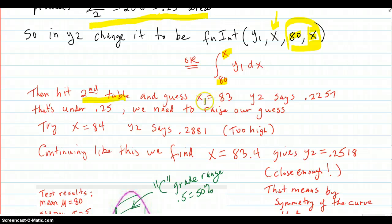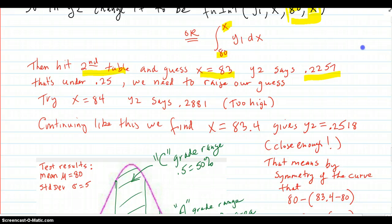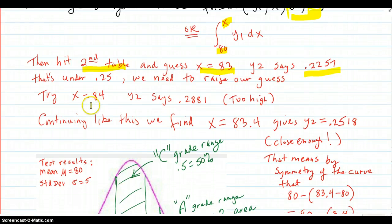And, I guessed 83. And so, the integral from 80 to 83 of our density function turned out to give out 0.2257. That's under 0.25. That's not enough. So, we need to raise our guess to get a little bit bigger away from 80. So, when we put in 84, it said it was 0.2881. That's too high. So, then you guess decimals in between there and it turns out that 83.4 gives you 0.2518 area. That's close enough.